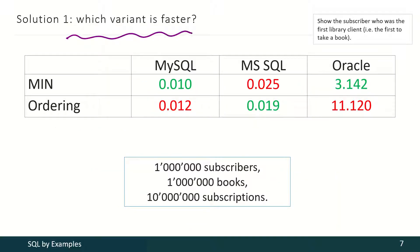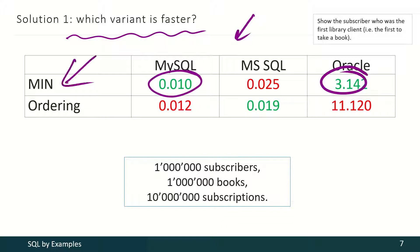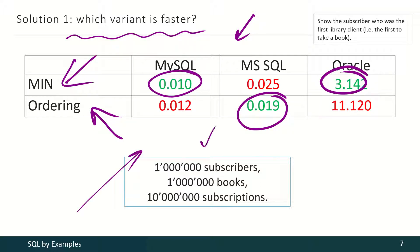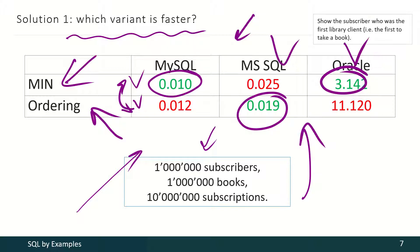Now let's quickly analyze which variant is faster. For MySQL and Oracle the first approach is faster, but for Microsoft SQL Server the second one is. Please remember that in other situations, with other data and other approaches, this picture may significantly change — this is not a rule. The variants may easily swap, and that's true for any DBMS.